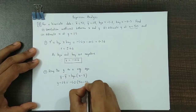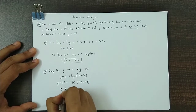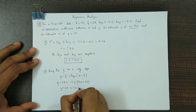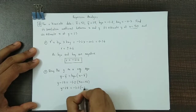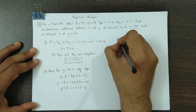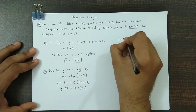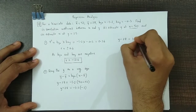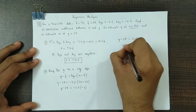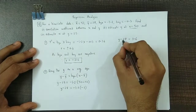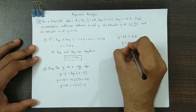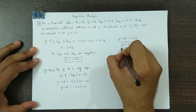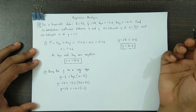x̄ is 53, so we have y minus 28 is equal to minus 1.2 into minus 3. Taking the product, we obtain 3.6. Therefore, y is equal to 28 plus 3.6, which gives us 31.6. This is the value for y at x equal to 50.